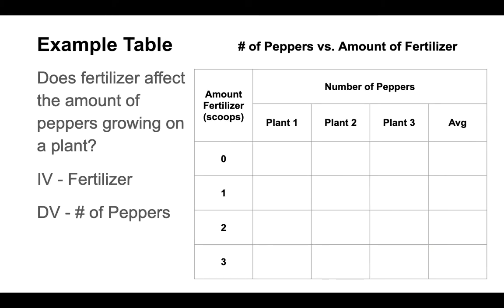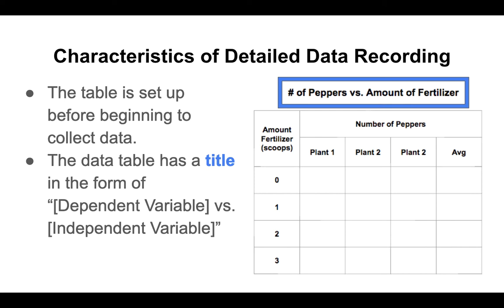So when I set this up, here's just a generic example of what this table might look like, and we're going to go through this. If we have our independent variable and we have our dependent variable, everything else is going to be organized around that. So it's really important that you be able to identify those independent and dependent variables. Here are some characteristics of well-done, organized data recording.